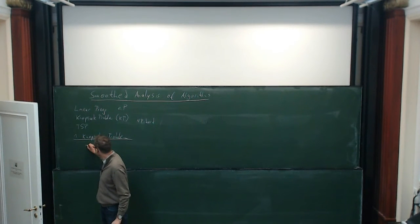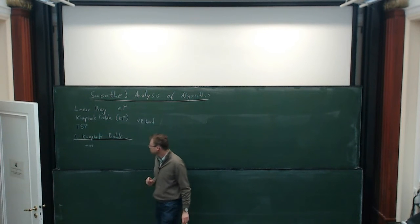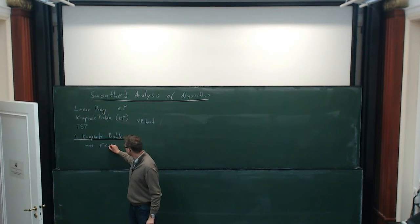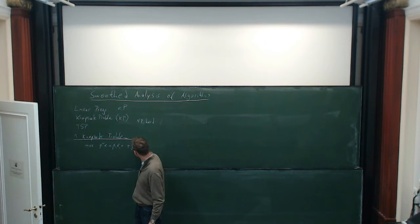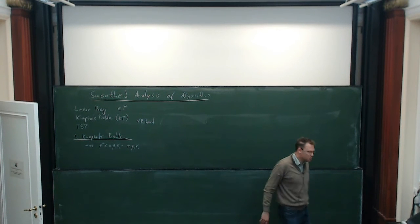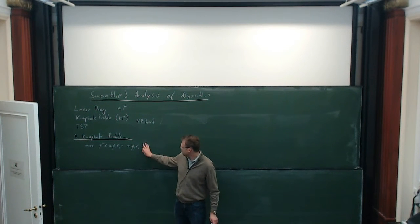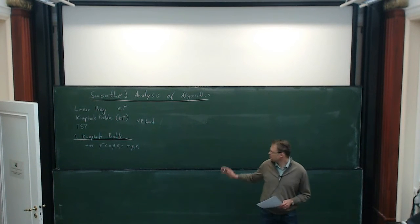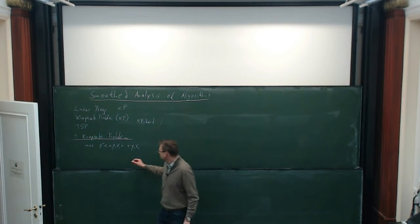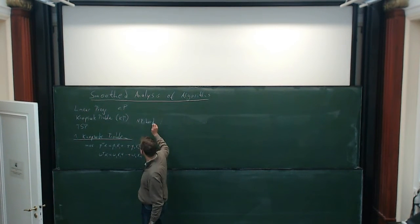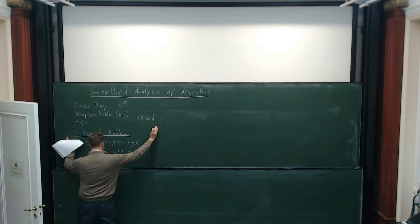Let me introduce my notation. I guess we have seen most of that already, but there will be a big difference to yesterday's talk: instead of rewards, I will talk about profits — that's what we want to maximize. Of course, we are given weights, and we have the constraint that the weight must not exceed the capacity. The Xi are simply binary variables.